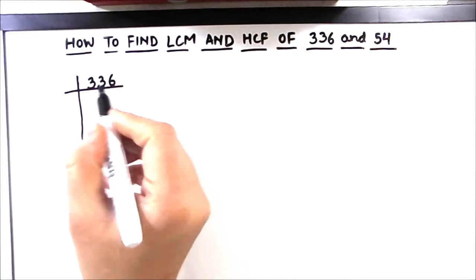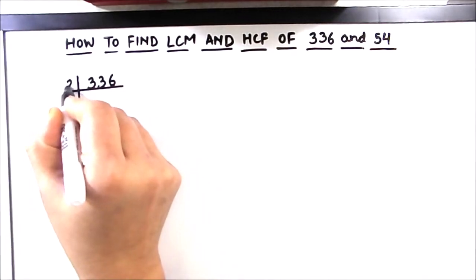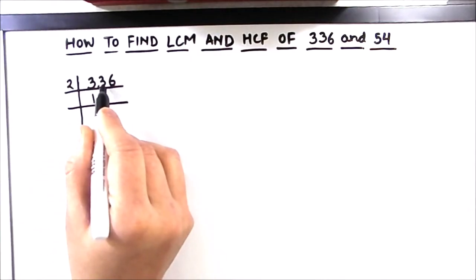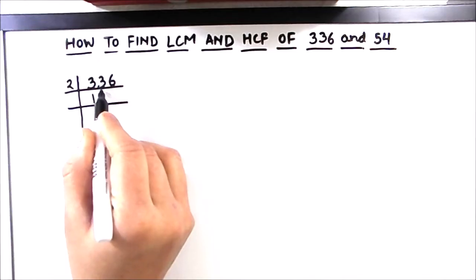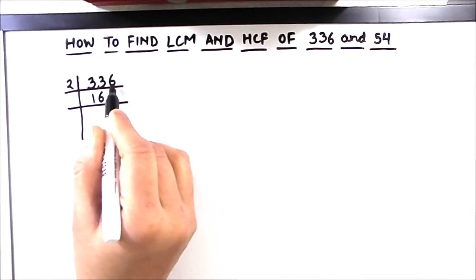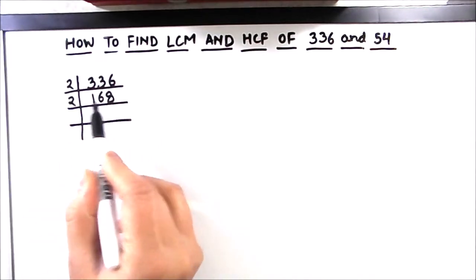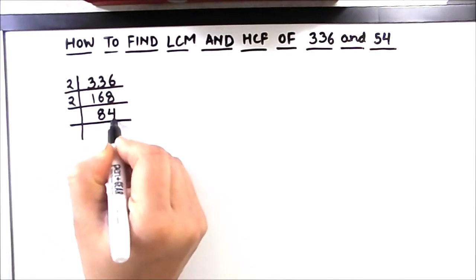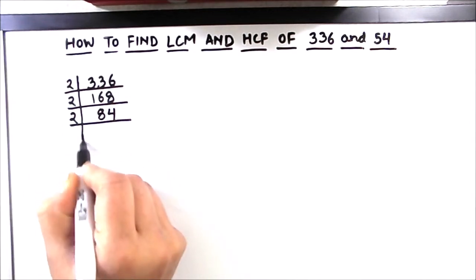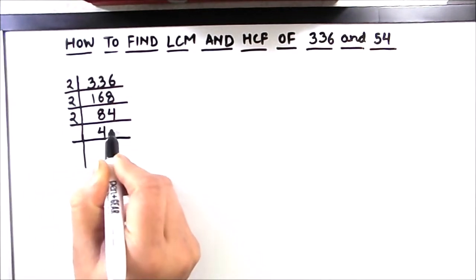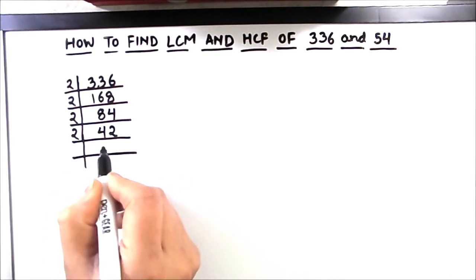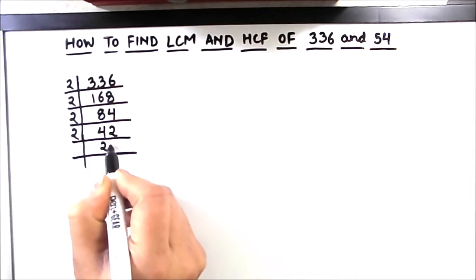336 is an even number, so it is easily divisible by 2. 2 times 168 is 336. 168 can also be easily divided by 2, giving 84. Again we use 2 as the prime factor: 2 times 42 is 84. 42 can also be easily divided by 2, giving 21.